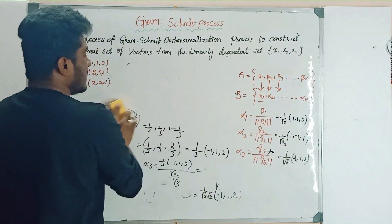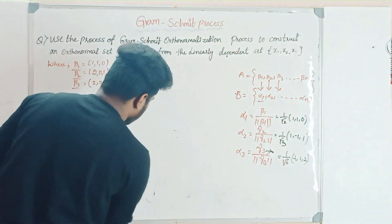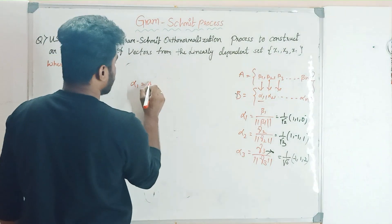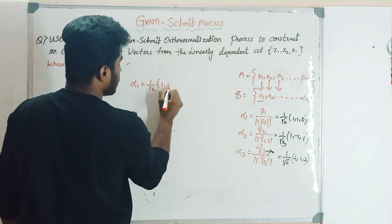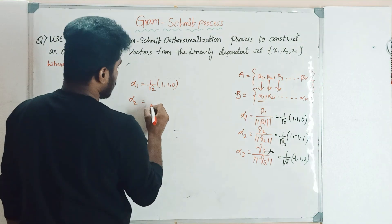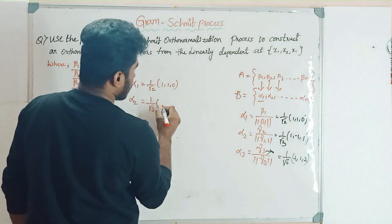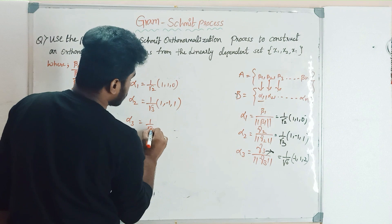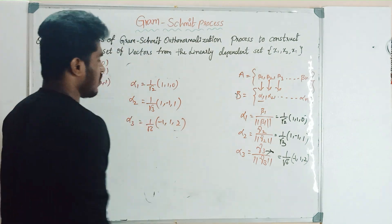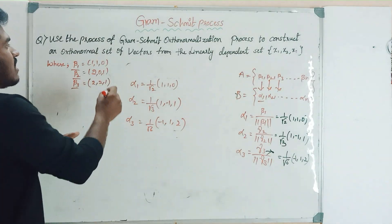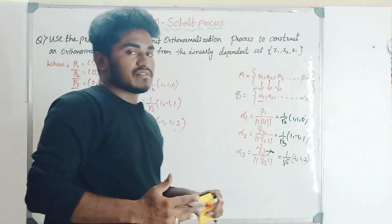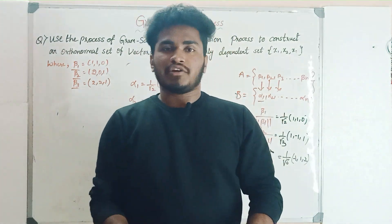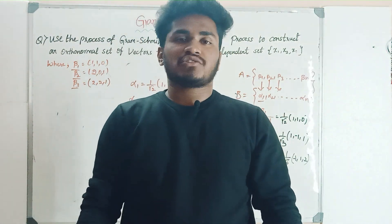After converting the orthogonal vectors into orthonormal vectors, the final orthonormal vector basis is: alpha 1 = (1/√2)[1, 1, 0]; alpha 2 = (1/√3)[1, −1, 1]; alpha 3 = (1/√6)[−1, 1, 2]. If you have any doubts please let me know in the comment section and we will try to clarify them. If you liked this video, please try to share it with your friends. Thank you.